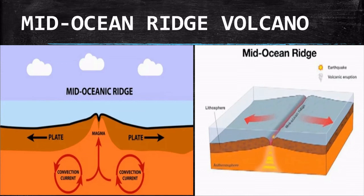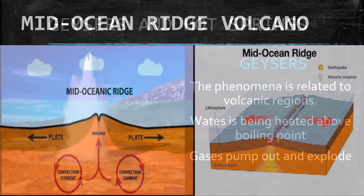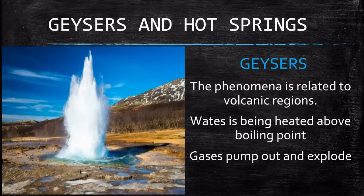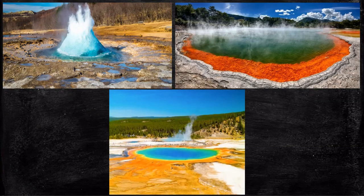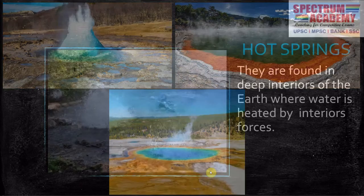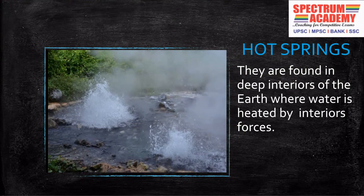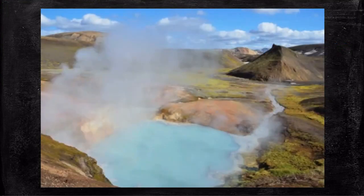Let's talk about geysers and hot springs, which are related to volcanism. Geysers are fountains of hot water heated beyond the boiling point of 100 degrees Celsius; they explode by gases pumping out. There are three major areas where geysers are found: Iceland, New Zealand and USA. The world's best-known geyser is the Old Faithful in Yellowstone National Park in the USA, which erupts every 63 minutes. Hot springs, also known as thermal springs, are found in the deep interiors of the earth where water is heated by interior forces. Unlike geysers, they do not explode. They are found in Iceland, Japan and Hawaii.